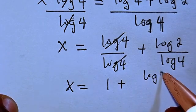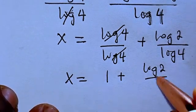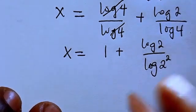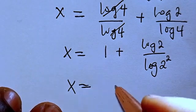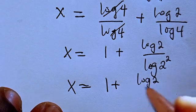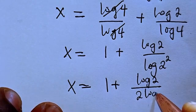Here we have log 2 divided by log 4, can also be expressed as log 2 divided by log 2 to the power of 2. Then we have x to be equals 1 plus log 2 divided by 2 log 2.